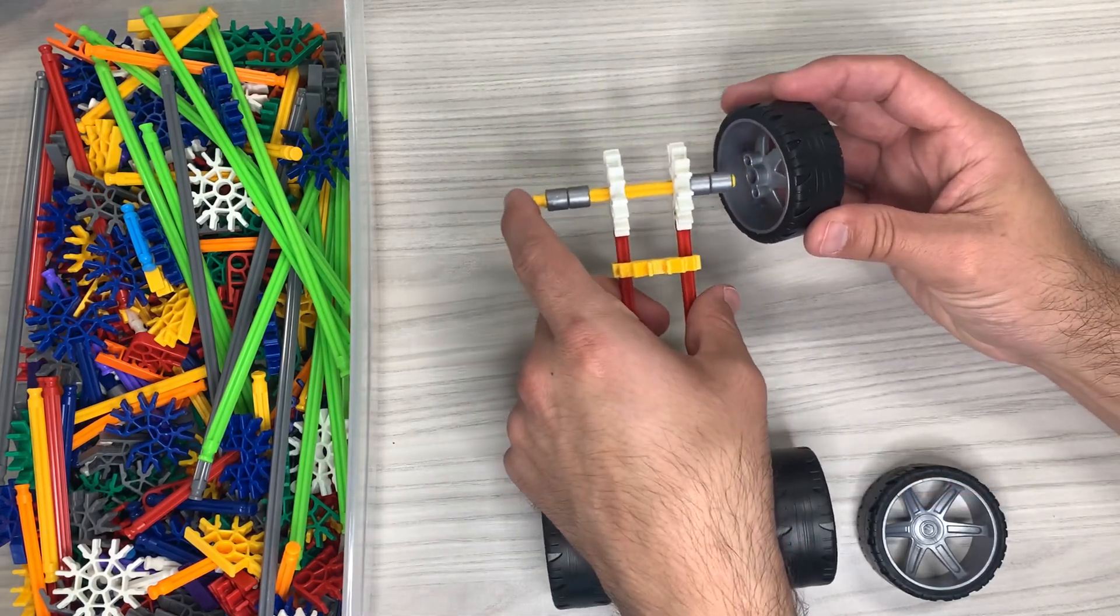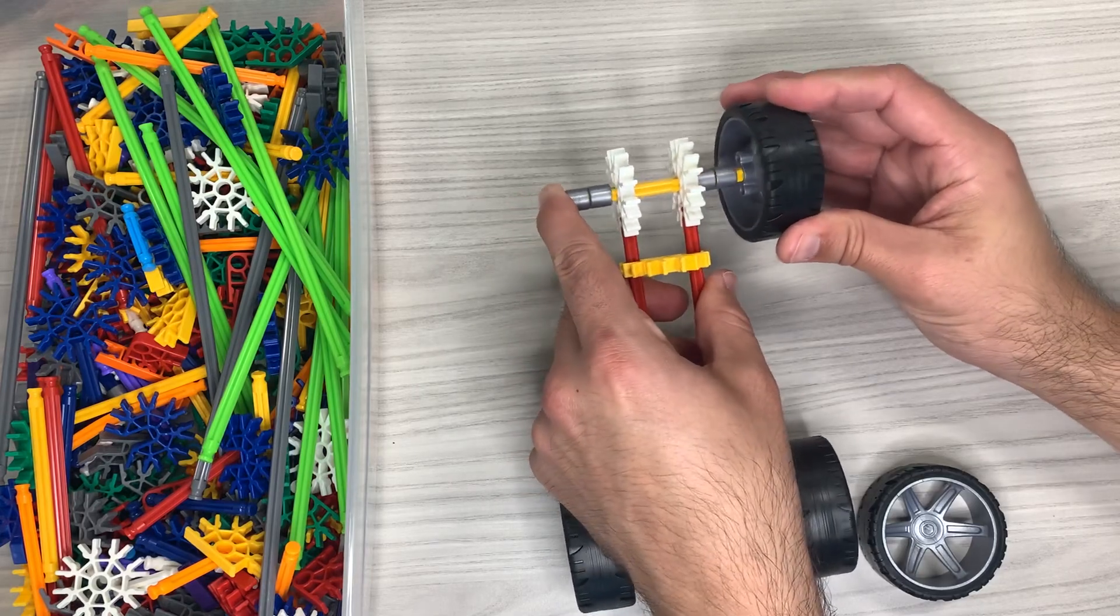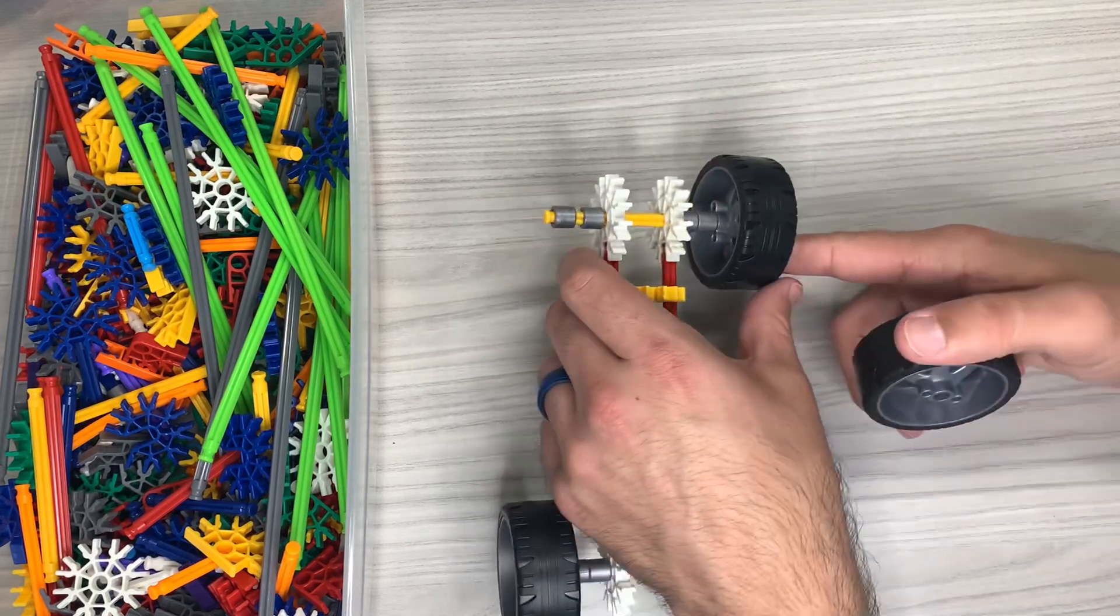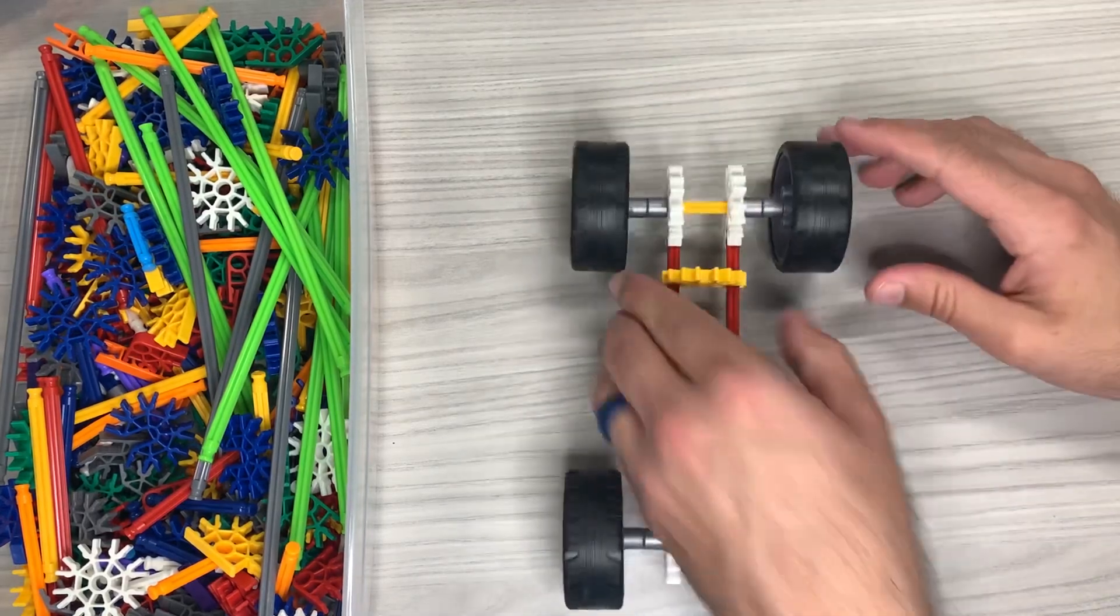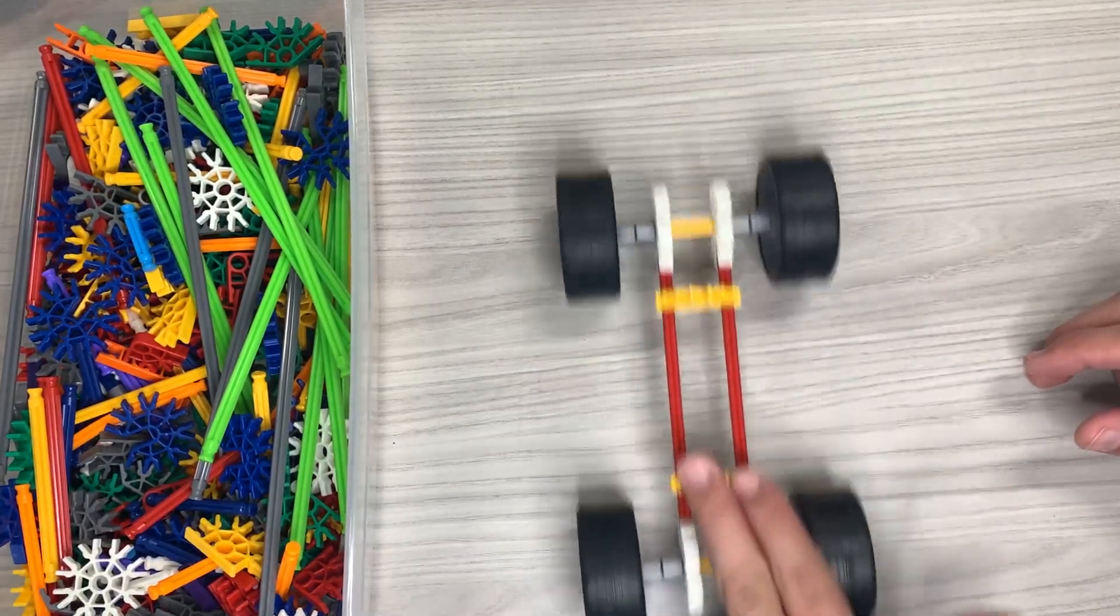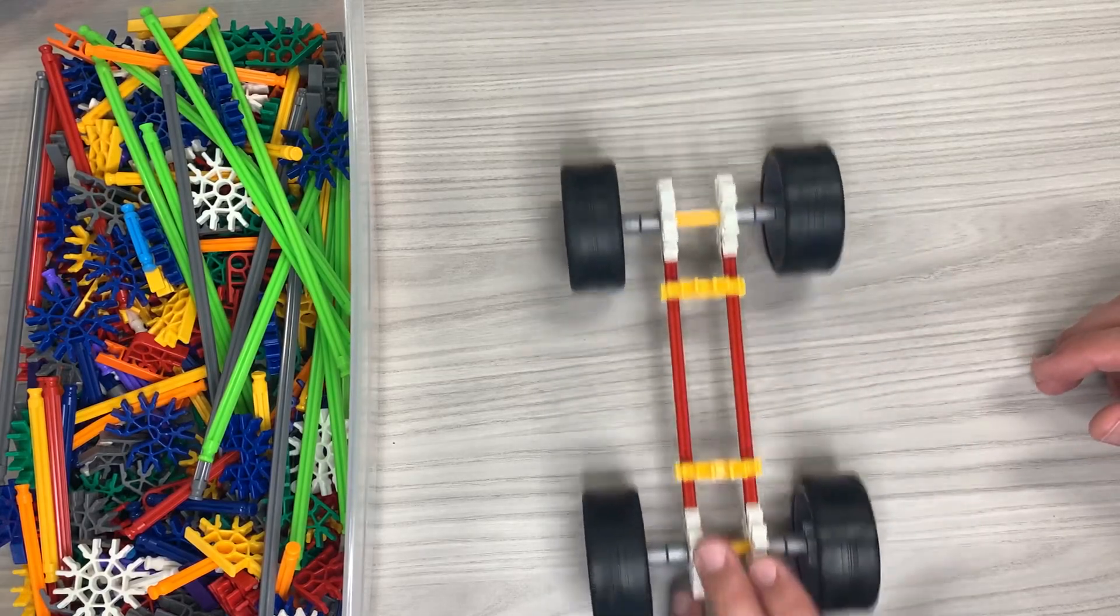Another tire on the front axle. And then another tire on the last one. So now you have the actual base of the car with the axle and everything.